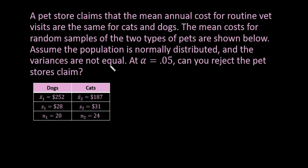So with this, the reason that we know it's a two-sample t-test is because we're talking about two different samples or two different creatures — in this case cats and dogs — and we're trying to see if the mean annual cost for routine vet visits are the same. These would be independent samples because cats and dogs do not have anything to do with each other. A cat is independent of a dog.